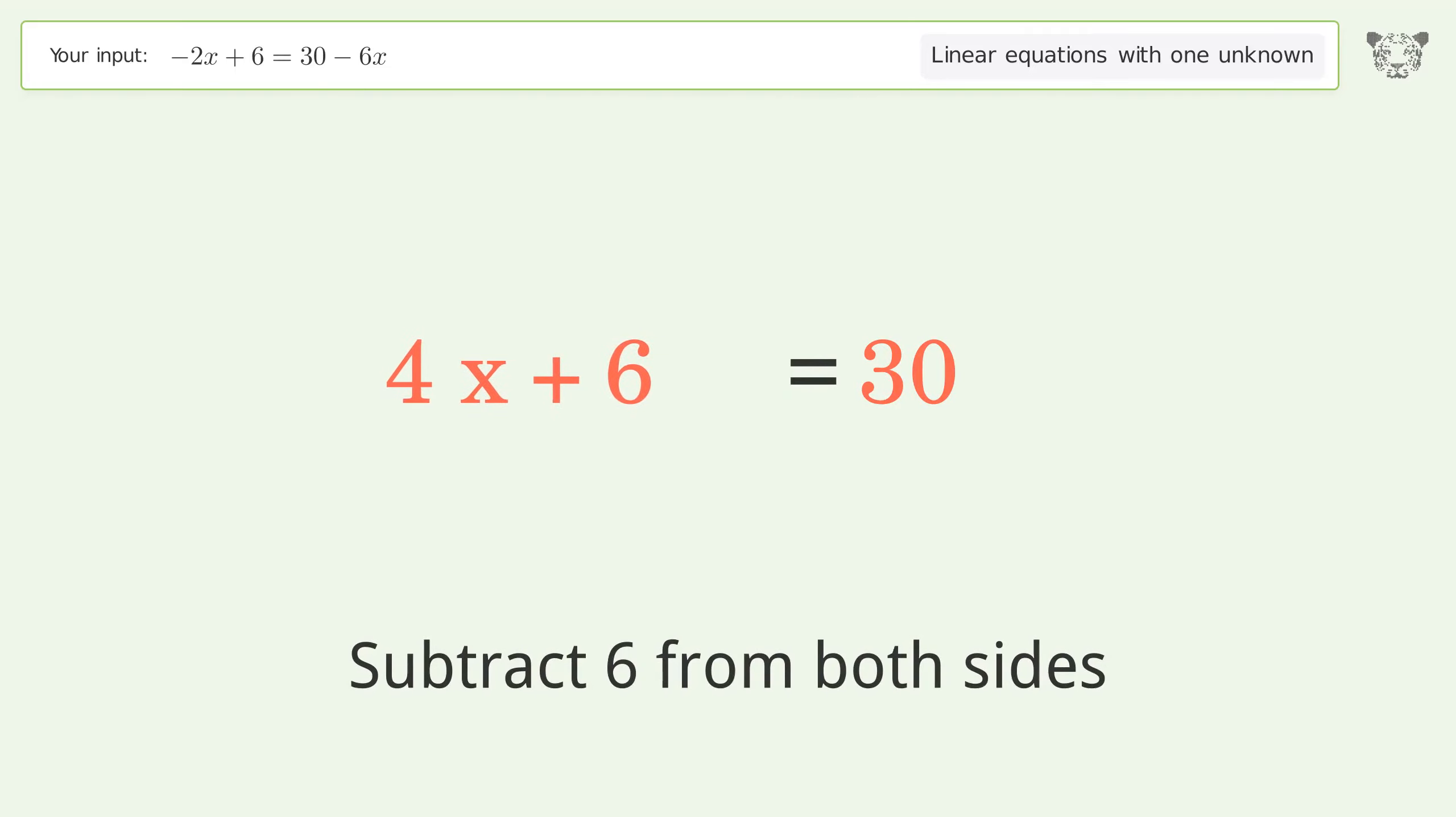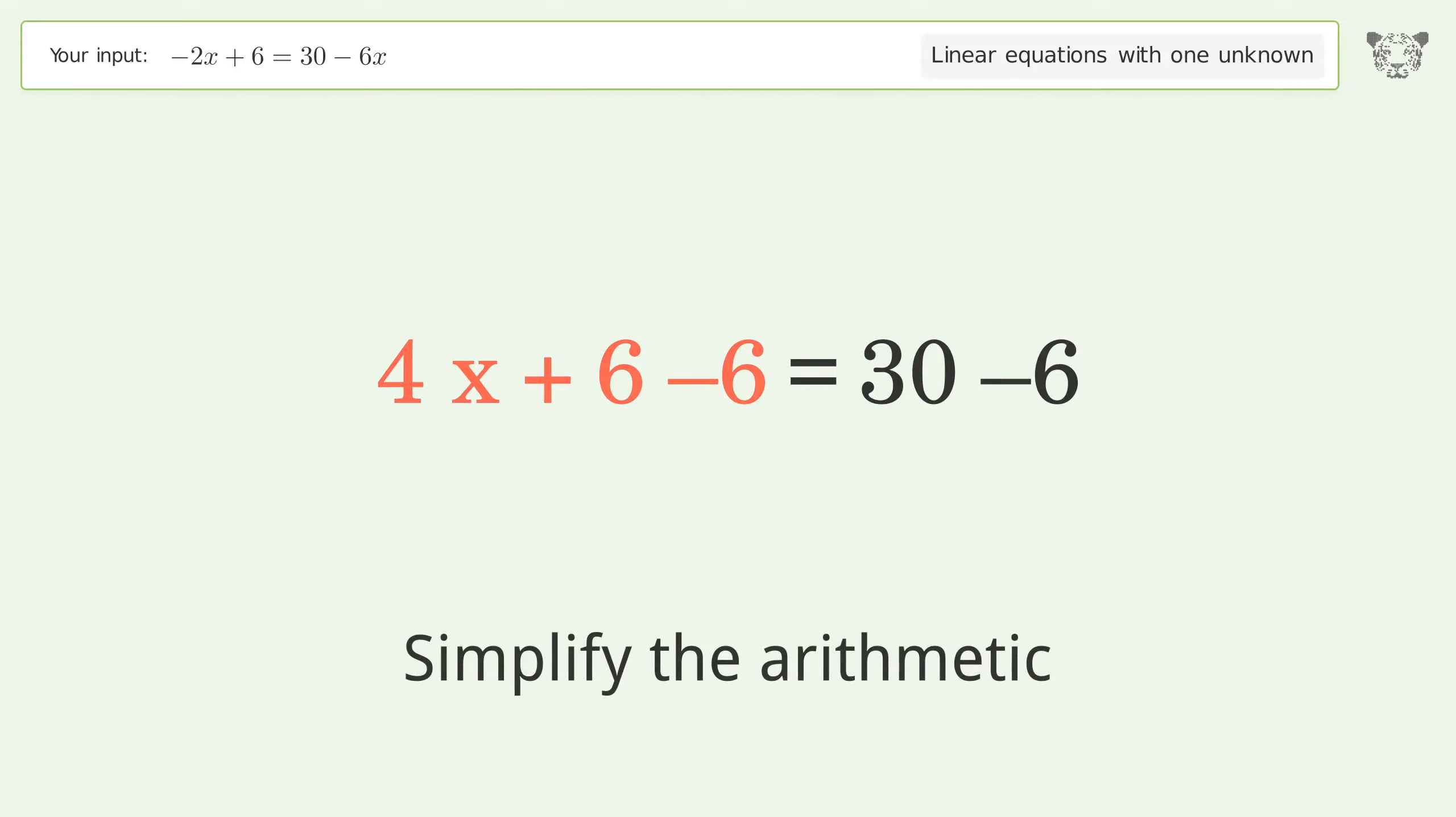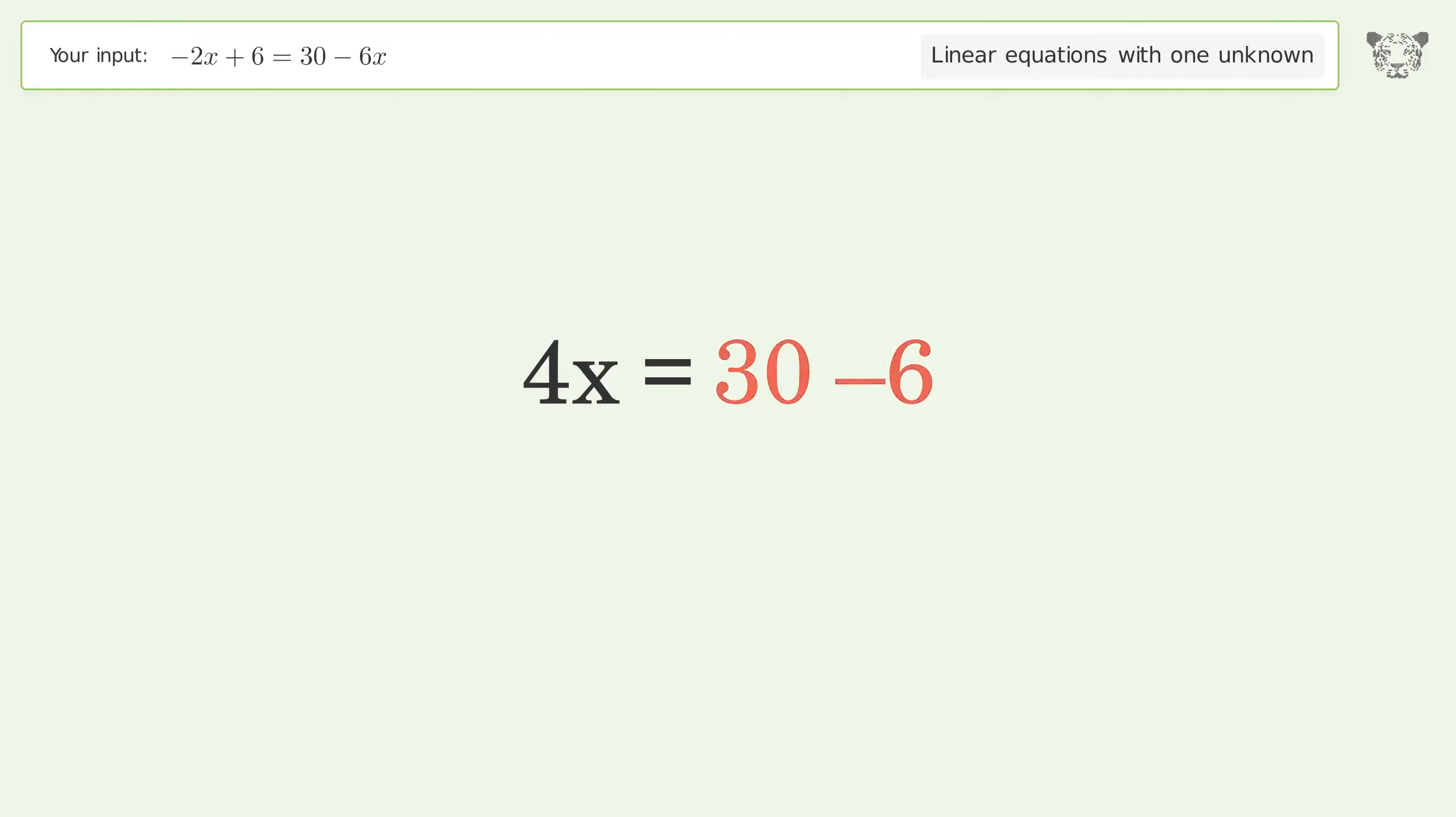Group all constants on the right side of the equation. Subtract 6 from both sides. Simplify the arithmetic.